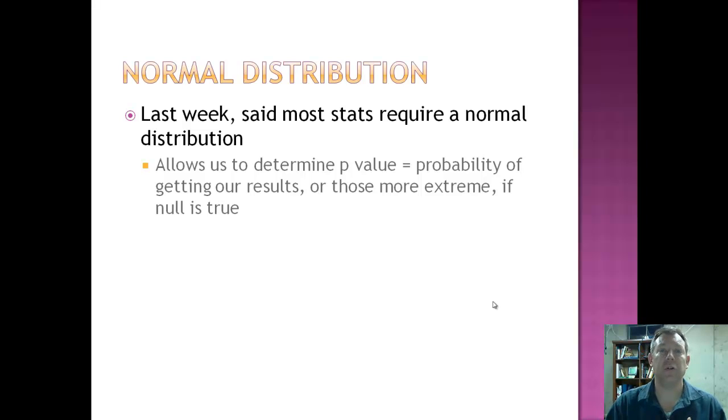So you remember that I said last week most stats require a normal distribution. And if we assume or if we know that they come from a normal distribution, we said that the normal curve is magic, it's symmetrical. And we can use it to determine our p-value, the probability that we got our results or those more extreme if the null is true.